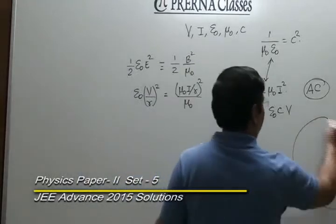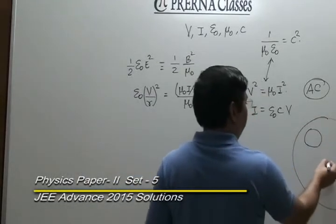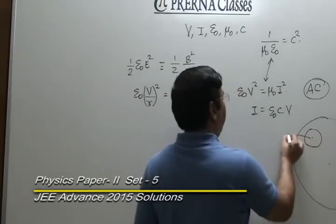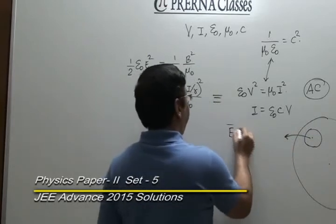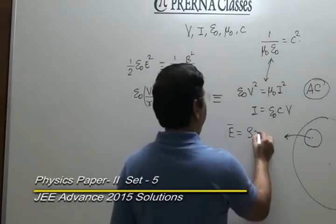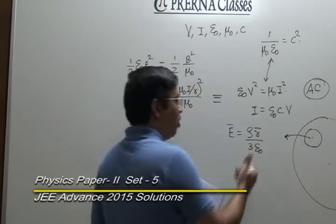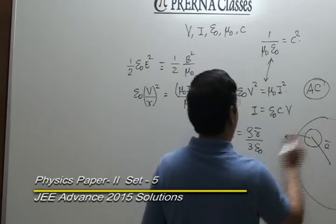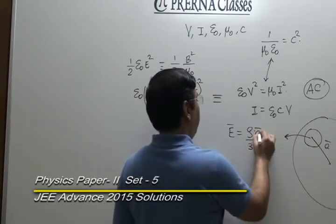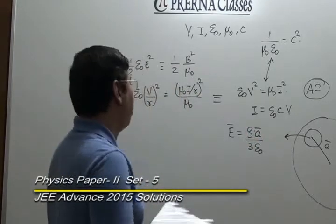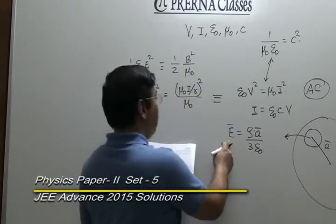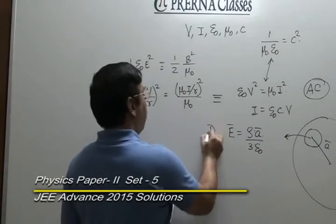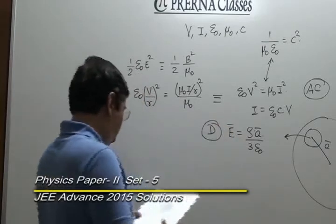The next question involves a sphere with a cavity. The electric field within the cavity is constant, given by ρ·a/(3ε₀), where a is the vector from the center of the sphere to the center of the cavity. The field is uniform, and both its magnitude and direction depend on a. The correct answer is option B.